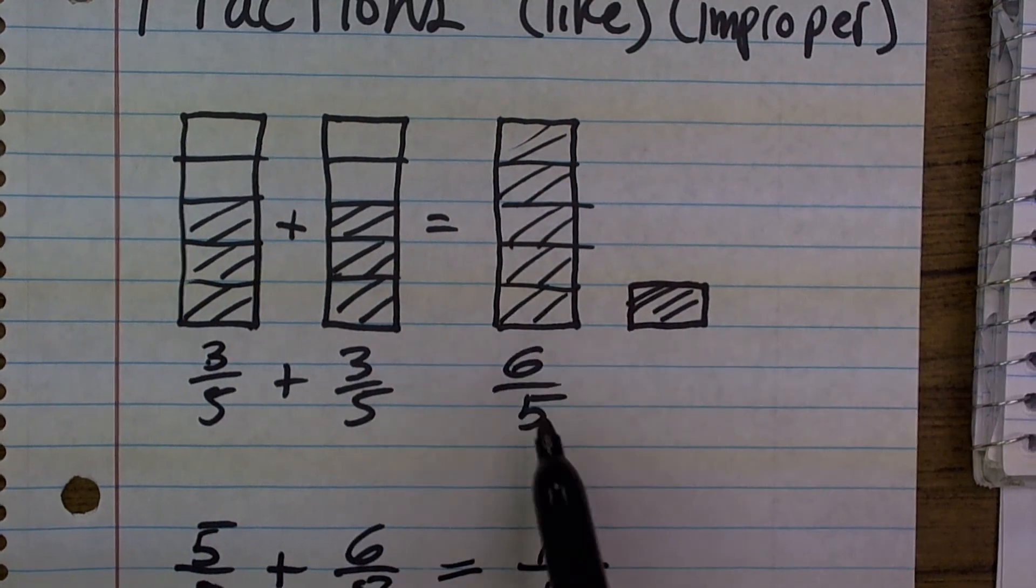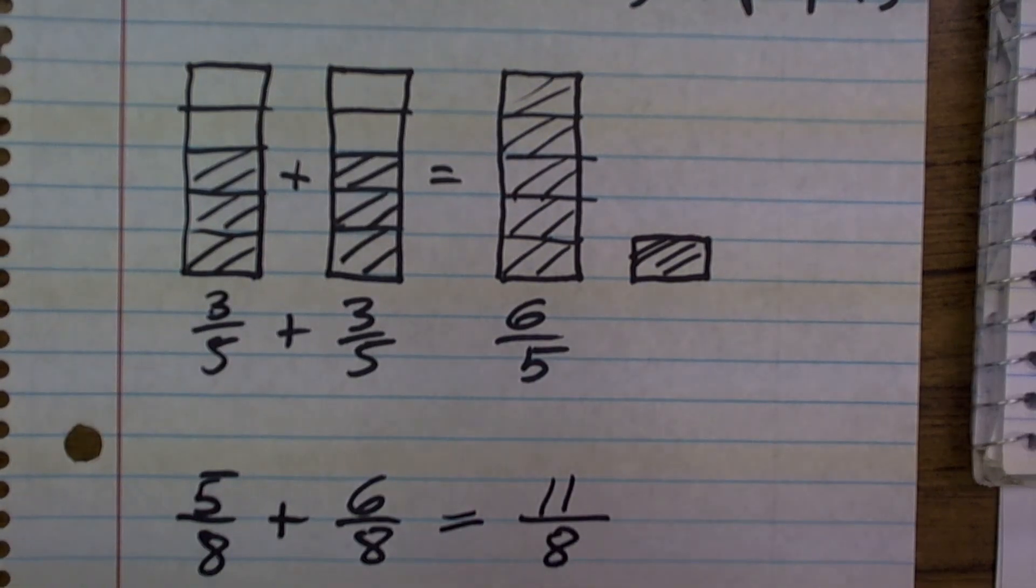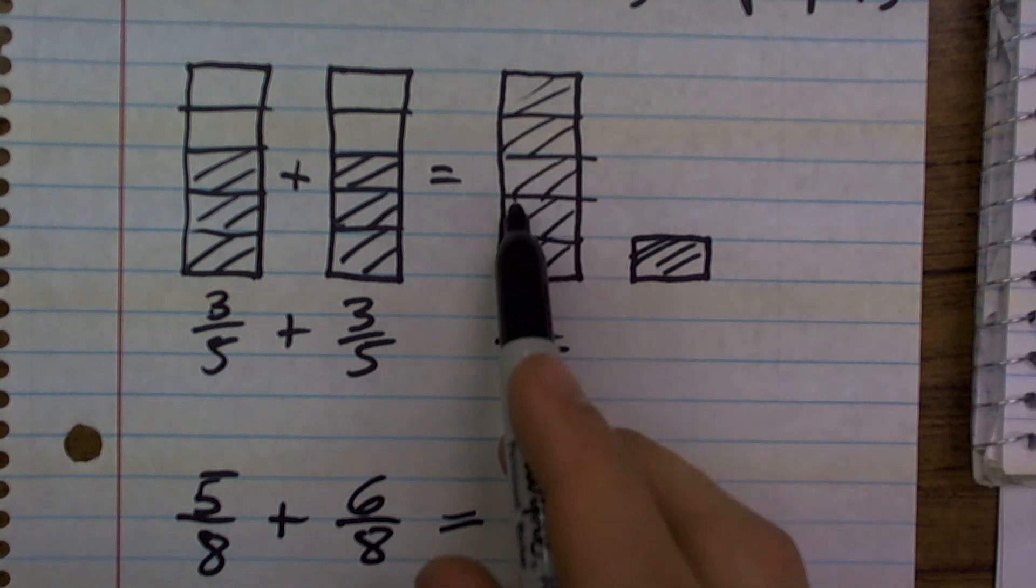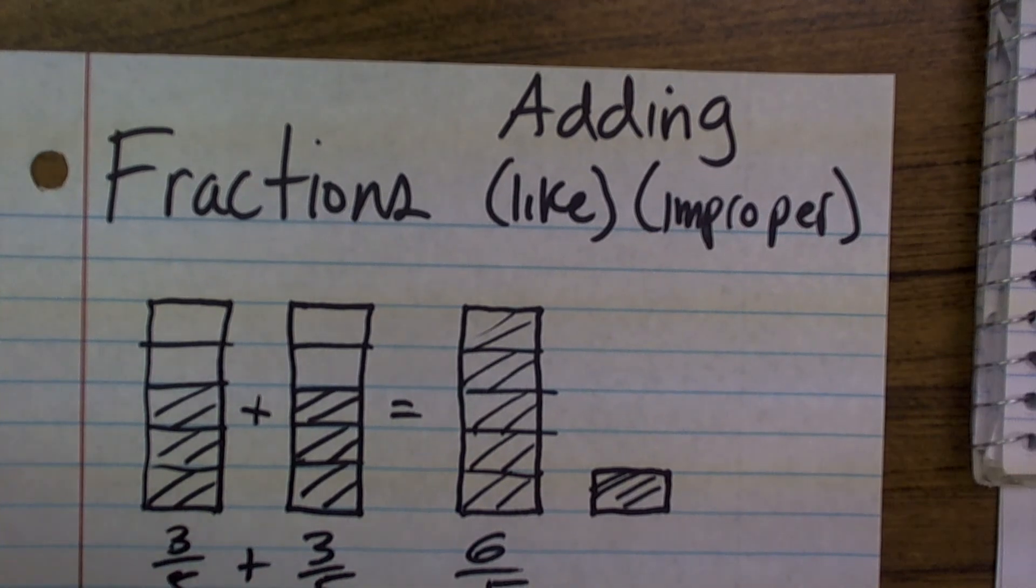So when you have 6 over 5 or 11 over 8, you just need to understand that you have more than 1, or your answer is going to be greater than 1 whole. And that is adding with fractions.